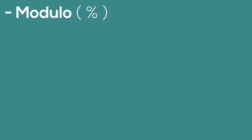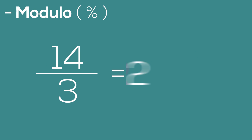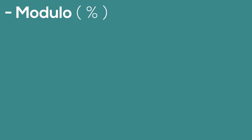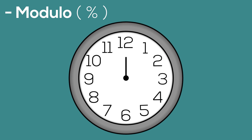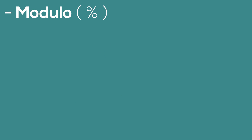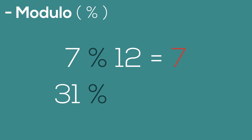The modulo function works kind of like division, except it returns only the remainder or the overflow of the division. Using the clock analogy, we can think of a clock as being time modulo 12. If we were at noon and went forward 14 hours, we would land on 2. Also, lower numbers are unaffected — so 7 modulo 12 is still 7, while 31 modulo 12 is also 7.